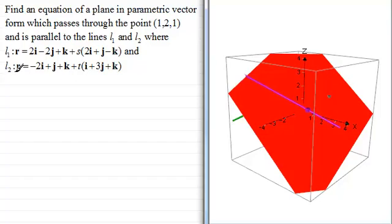And the line L2, the green line just behind the plane, is given by r = -2i + j + k + t(i + 3j + k).